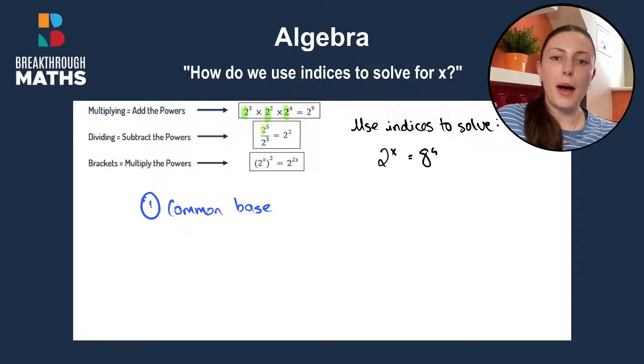Same here, we have 2 to the power of something and 2 to the power of something. Again, a common base of 2. Here we have a base of 2 which means our answer can stay with that common base. So all of our answers here will have the same base of 2.